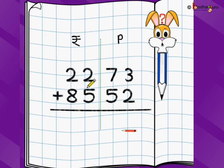Let us say we had 22 rupees and 73 paisa and we got 85 rupees and 52 paisa more. We write it just like the previous one like this. Now we start from the rightmost position. 3 plus 2 is 5, 7 plus 5 is 12.